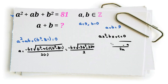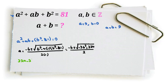Now, since a and b are integers, we need 324 minus 3b squared to be a perfect square. We note that 324 equals 18 squared, and the expression 324 minus 3b squared must be a non-negative perfect square.